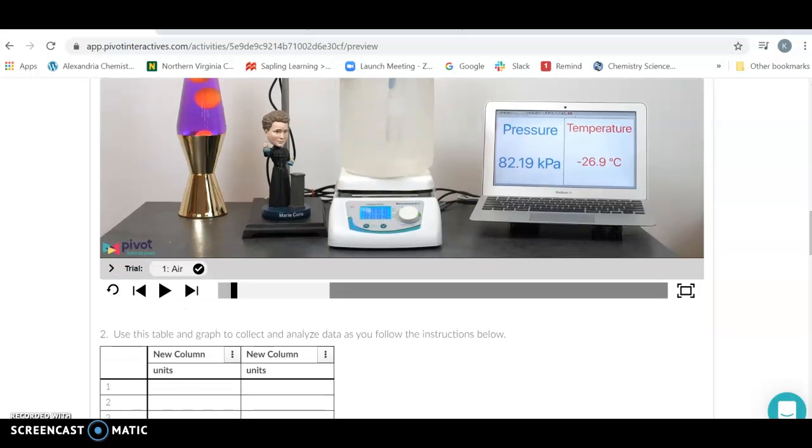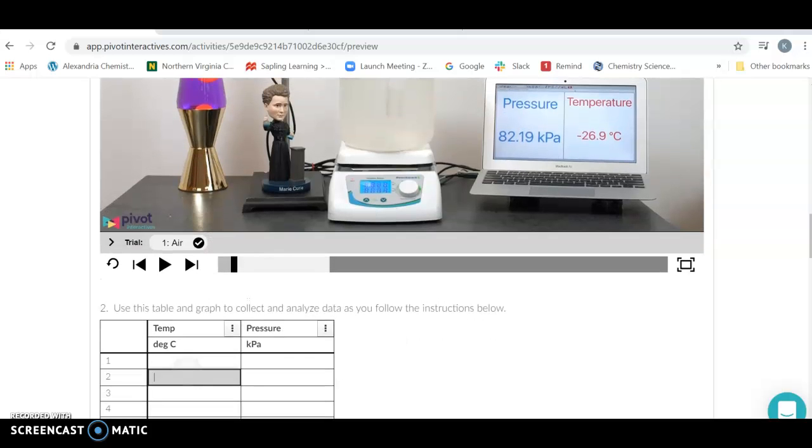What you're going to do with this data is you're going to come down here and record it. You need your columns, so I'm going to put my temperature here in degrees Celsius. Let's go over to the vertical axis here and put pressure. It's always good to put the unit, so I can change the units and put in degrees Celsius for the temperature and kPa for the pressure.